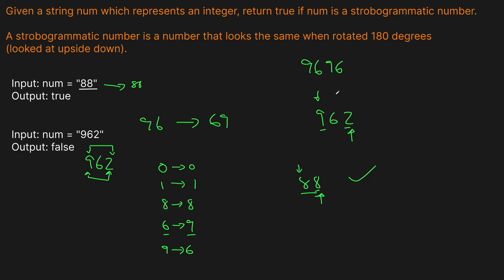Consider 9696: with our pointers on 9 and 6, when 9 is flipped it becomes 6 — both match. Then we move the left pointer up one and the right pointer down one, and we keep checking 6 and 9 — same logic. We continue until either a case breaks or the two pointers cross in the middle of the string. Once we reach that middle point, we can stop checking since both sides have been verified.